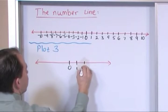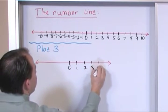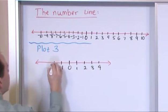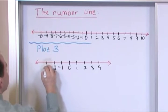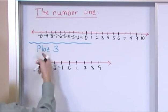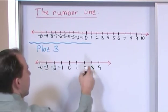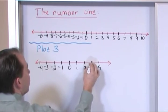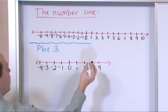You have zero, one, two, three, four, and of course you have your negative numbers. Negative one, negative two, negative three, negative four. Plot the number three. It's very simple. You just find the number three and you put a dot there. That is the number on the number line.